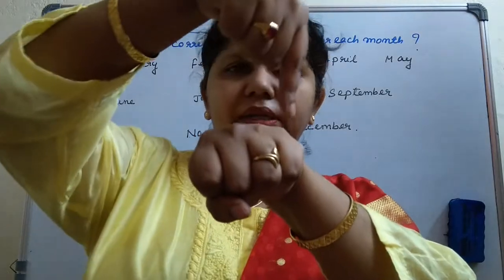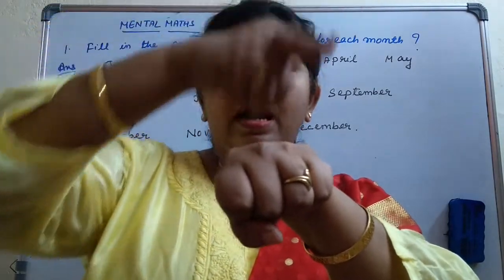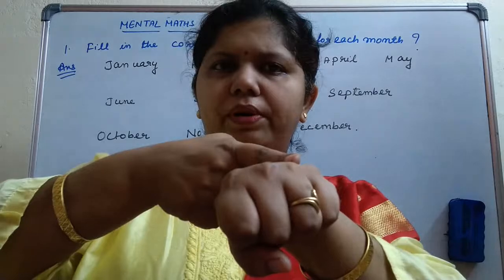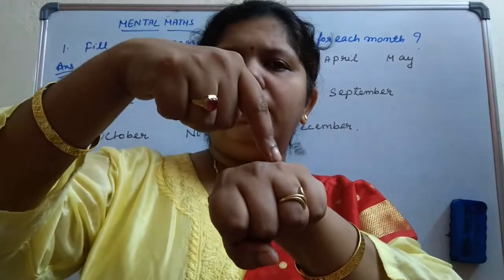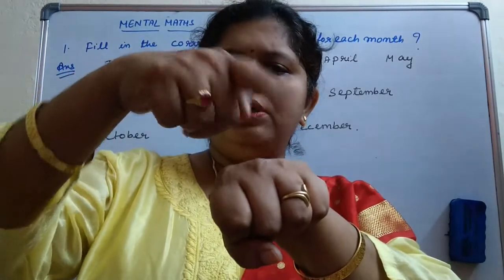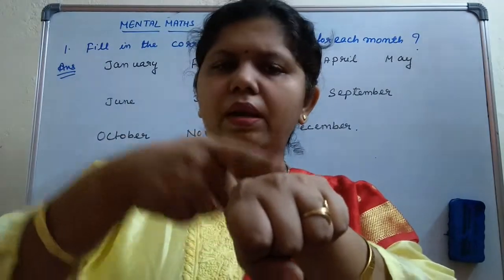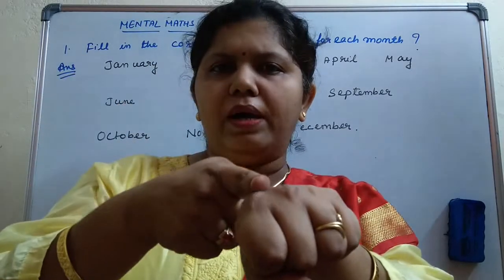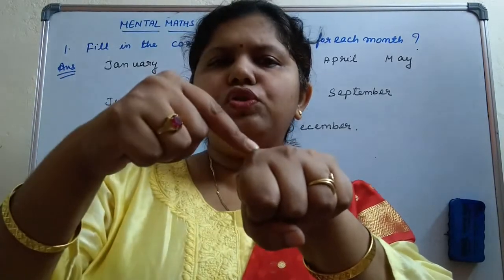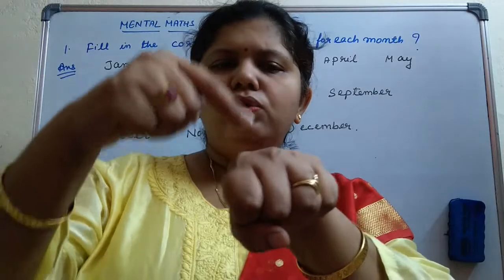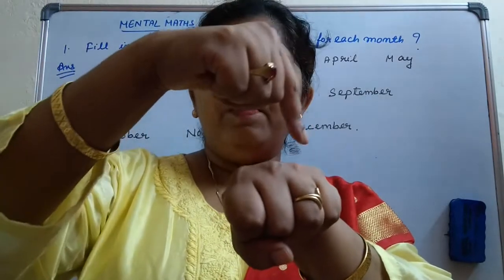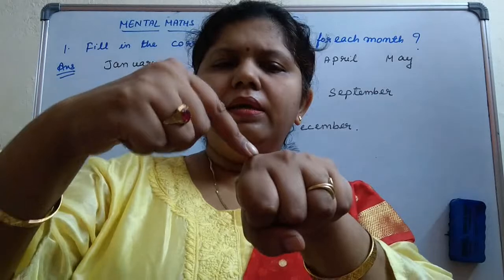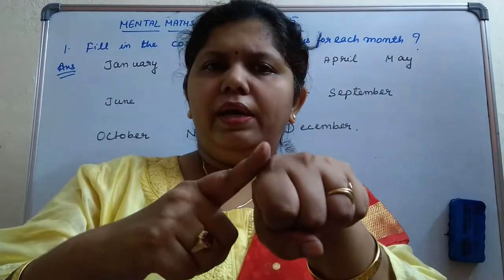We will start from the month of January — January will come in the raised part. After that the not raised part is February. Then the raised part again is March. Not raised part is April. Raised part is May. Not raised part is June. And then comes July. So January, March, May, and July — these months will have 31 days.